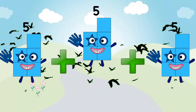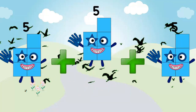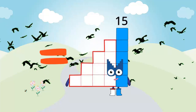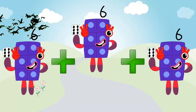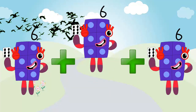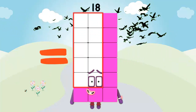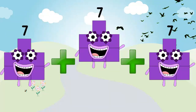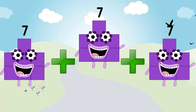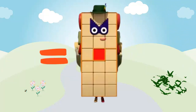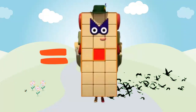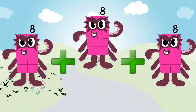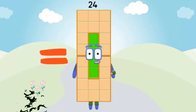5 plus 5 plus 5 equal 15. 6 plus 6 plus 6 equal 18. 7 plus 7 plus 7 equal 21. 8 plus 8 plus 8 equal 24.